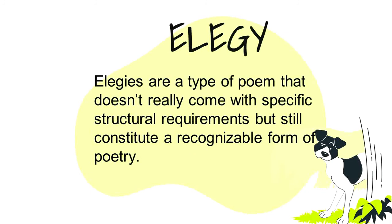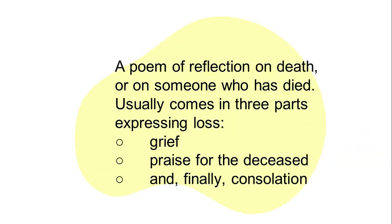Elegies are a type of poem that don't really come with specific structural requirements but still constitute a recognizable form of poetry. What makes an elegy an elegy is its subject — that is, death. Elegies are poems of lamentation. The word elegy itself comes from the Greek word meaning to lament. A poem of reflection on death or someone who has died usually comes in three parts: expressing loss and grief, praise for the deceased, and finally, consolation.